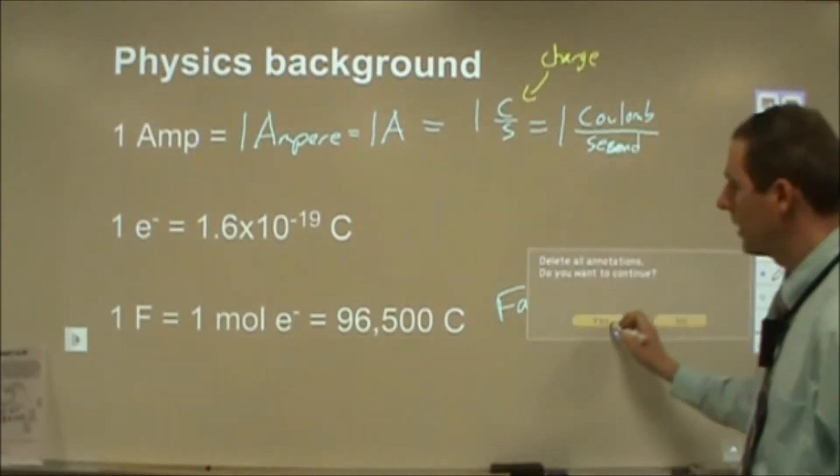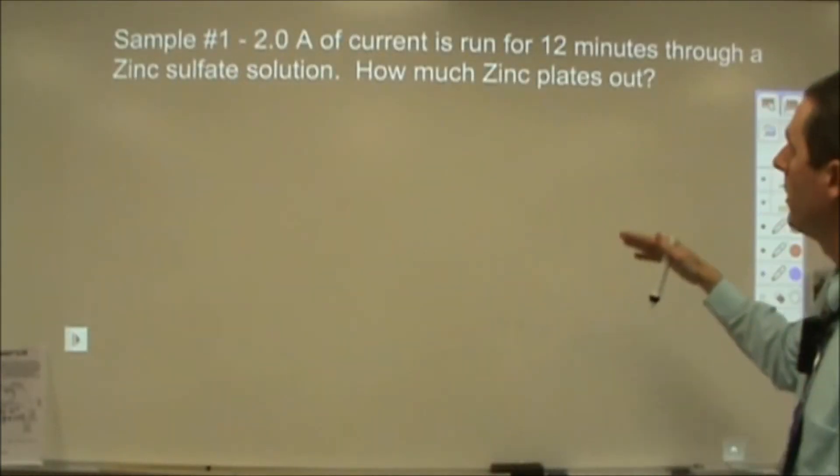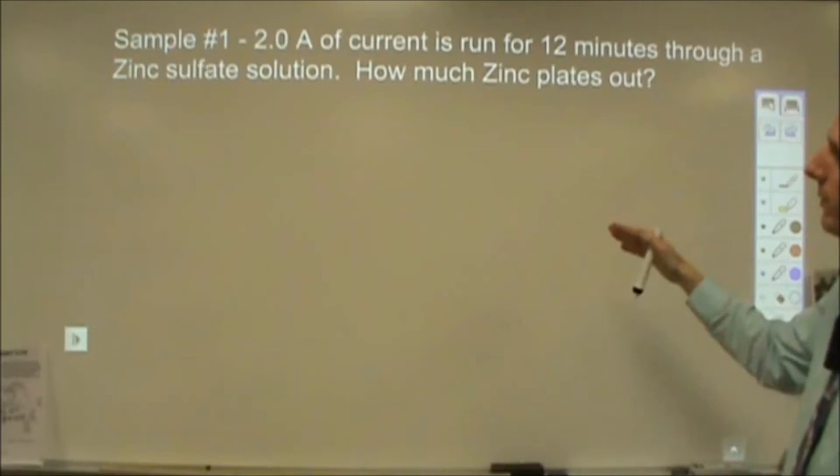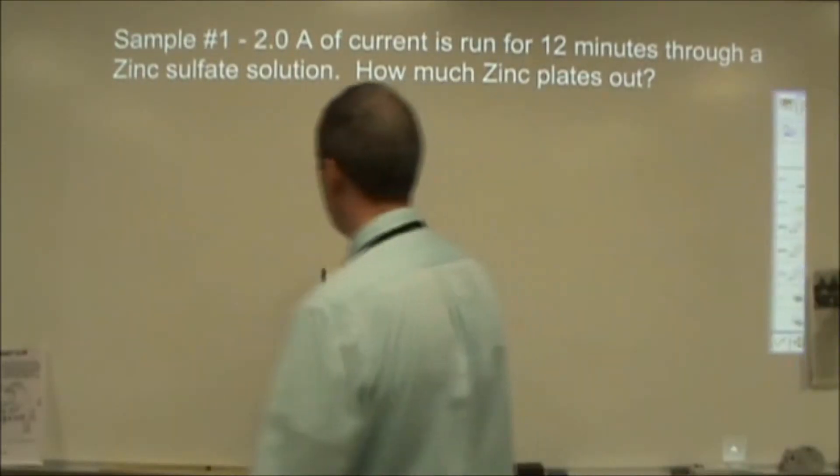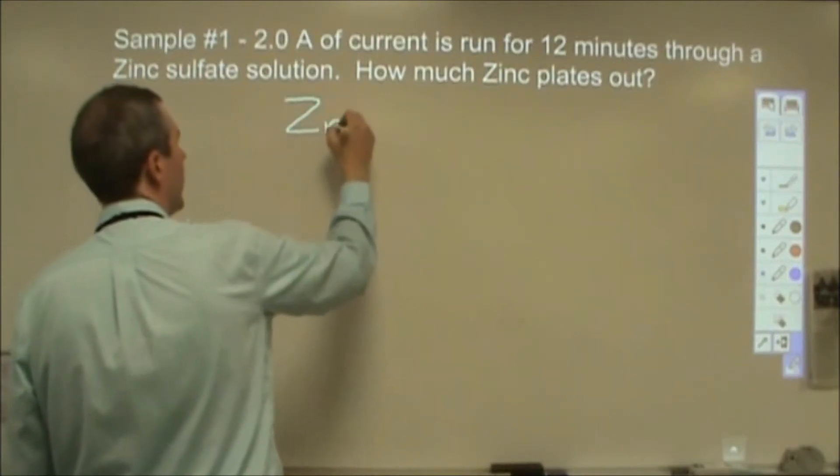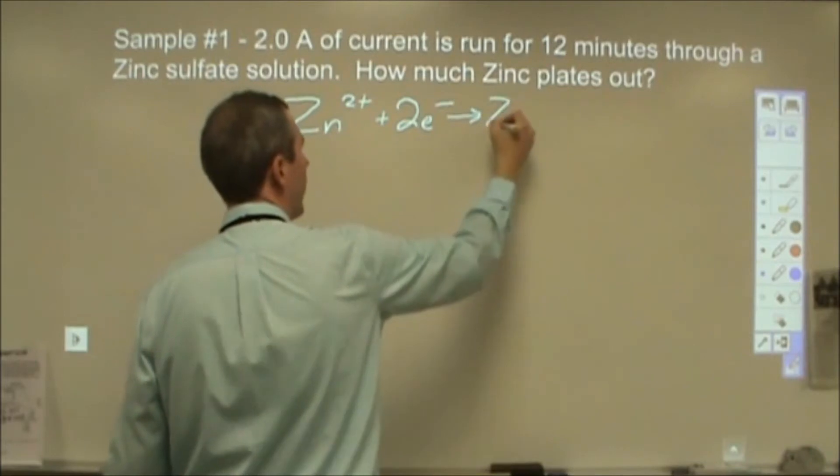Alright, so let's take a look at a couple sample problems to give you an idea on that. So the first one says 2 amps of current is run for 12 minutes through a zinc sulfate solution. How much zinc plates out? Let's start with the reaction itself. So the reaction itself is that the zinc 2 plus is going to combine with two electrons to form zinc metal.